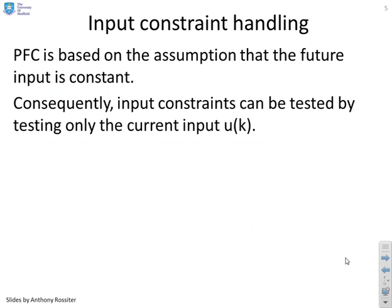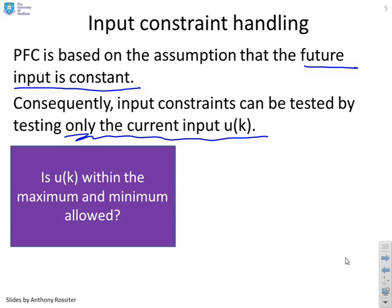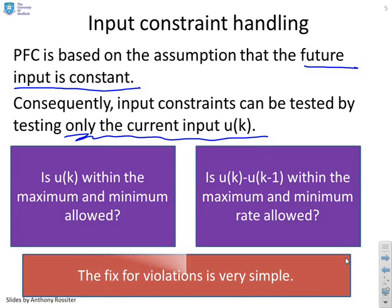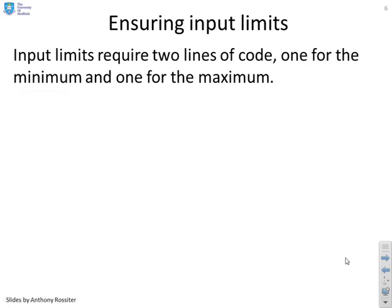Now PFC is based on the assumption that the future input is constant, and consequently input constraints can be tested by testing only the current input UK, and that makes it very simple. All you have to do is say is UK within the maximum and minimum allowed, and similarly is UK minus UK minus 1, or the rate within the maximum and minimum rate allowed. So the fix for possible violations is very simple.